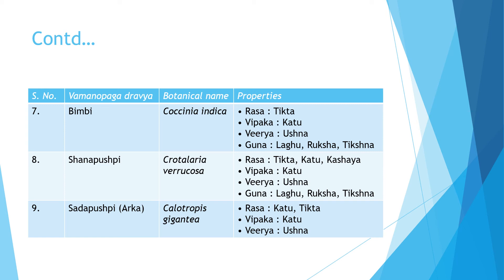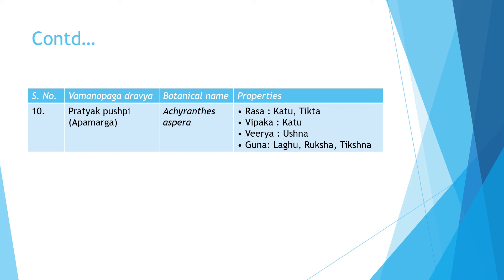Sada pushpi, also known as argh, is Calotropis gigantea — it is kattu tikta rasa, kattu vipak and ushna virya. Pratyakushpi or apamarg is the tenth and last Vamanupak dravye. Its botanical name is Achyranthes aspera. It is kattu tikta rasa, kattu vipak and ushna virya. It is laghu, ruksha and tikshna in guna.